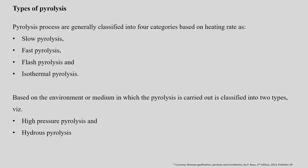The pyrolysis process is generally classified into four categories based on heating rate: slow pyrolysis, fast pyrolysis, flash pyrolysis and isothermal pyrolysis. Based on the environment or medium used, it is further classified into high pressure pyrolysis and hydro pyrolysis.